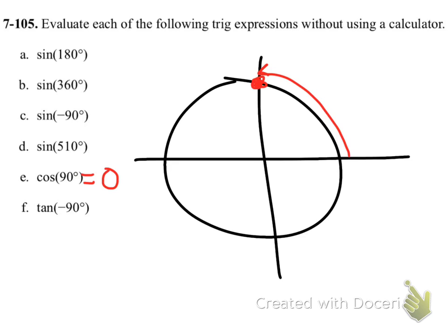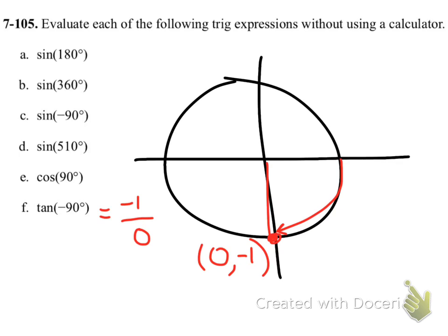The next one, tangent of negative 90. So we located where negative 90 was before, right here. So if I look at that, that means my cosine value is zero. My sine value is a negative one.